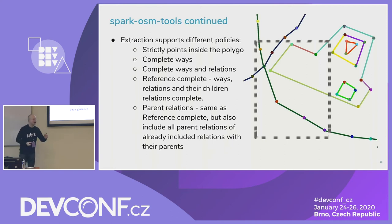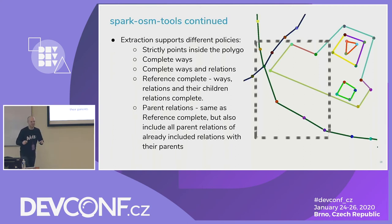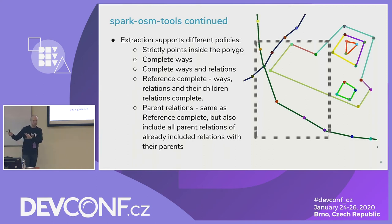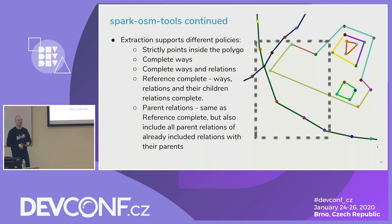Another option: you can find parents of included relations that aren't even referenced by content inside your area of interest and include them. For example, finding parents for Brno would include the South Moravia region boundary, Czech Republic boundary, European Union boundary, and so on. It's a pretty expansive definition of extraction by area, but technically you can do it. Most of this was written just for fun.